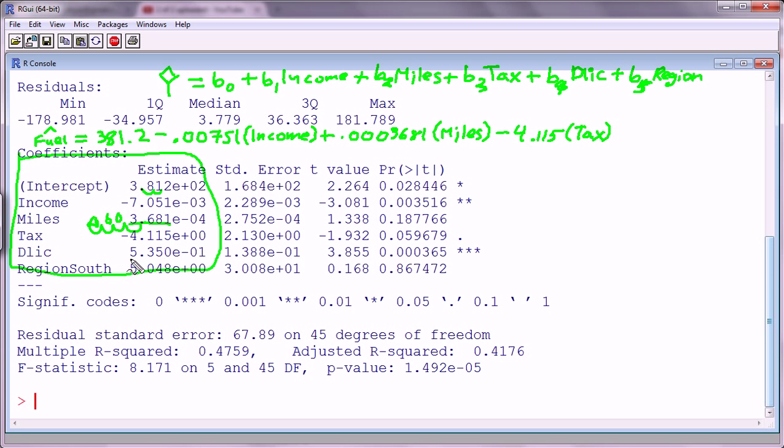Next, driver's license, D-lice, is positive 5.35 times 10 to the negative one. That means this is going to the left one decimal place. So it's plus 0.535 times D-license. These are all variables: D-license, tax, miles, income. They're all variables.